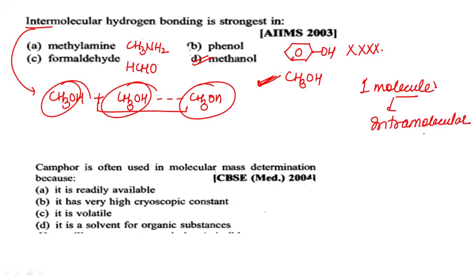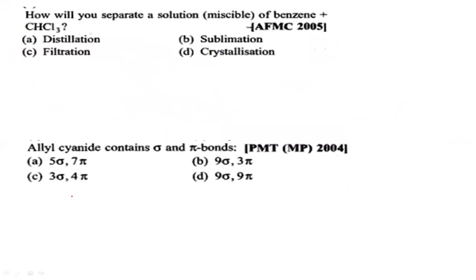Camphor is often used in molecular mass determination because — it is easily available, highly hygroscopic, volatile, or it is a solvent for organic substances? The answer is that camphor is volatile, and this is its characteristic feature that makes it useful in molecular mass determination.